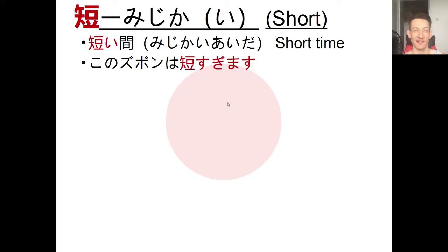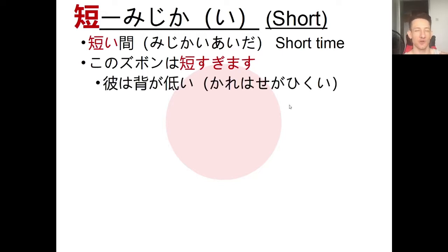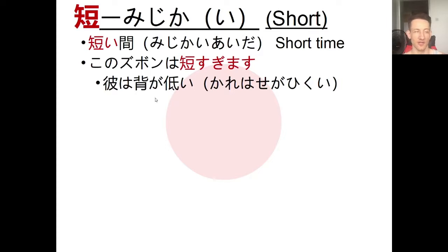Be careful - mijikai cannot be used to describe a person's height. If you want to say someone is short in stature, use the i-adjective hikui. For example, kare wa se ga hikui, meaning 'he is short.' You don't want to say kare wa mijikai - it doesn't make sense. Hikui means 'low,' like low to the ground.